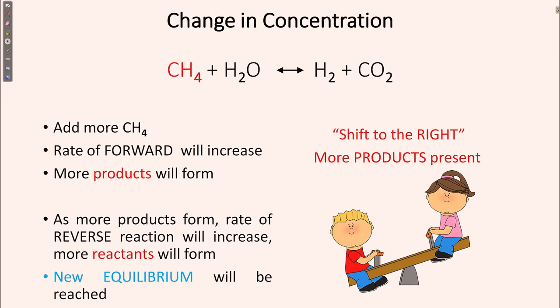If a change in concentration occurs, then what will happen? In our reaction, when methane reacts with water, this will convert into hydrogen and carbon dioxide. When the concentration changes, this will shift to the right direction — that means the forward reaction will occur and we will find more product. So if we add more methane, the rate of forward reaction will increase, meaning more product will form.